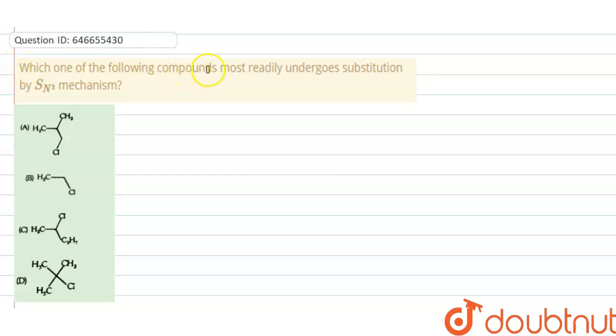Which one of the following compounds most readily undergoes substitution by SN2 mechanism? Here four options are given and we need to tell which one is correct. So first of all, SN2 mechanism is inversely proportional to stability of carbocation.